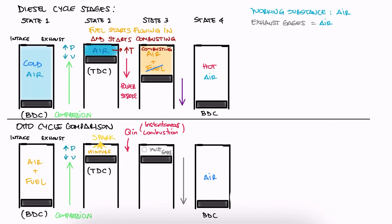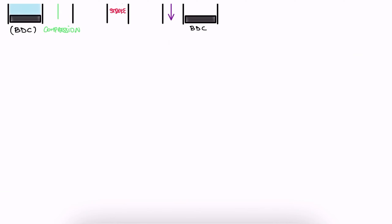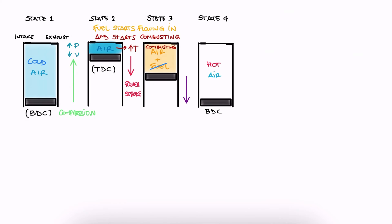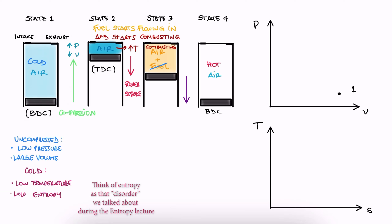So as you can see, the main difference occurs between 2 and 3. Let's see these processes on a PV diagram and on a TS diagram. We begin with uncompressed and cold air at state 1. This would be low pressure and large volume, which is the bottom right in the PV diagram, and low temperature and low entropy, or bottom left in the TS diagram.